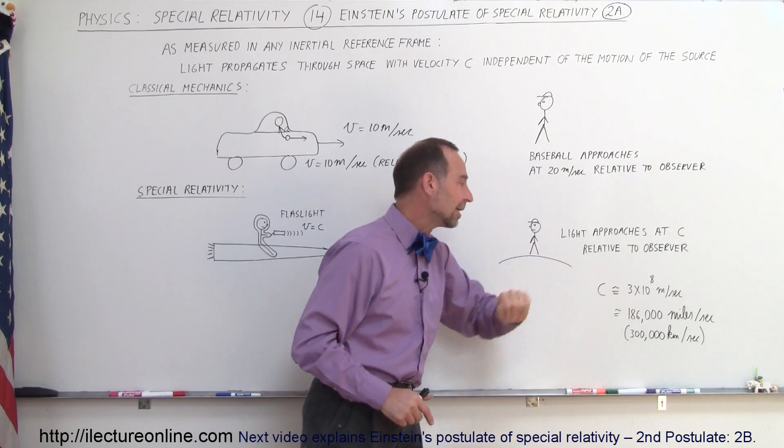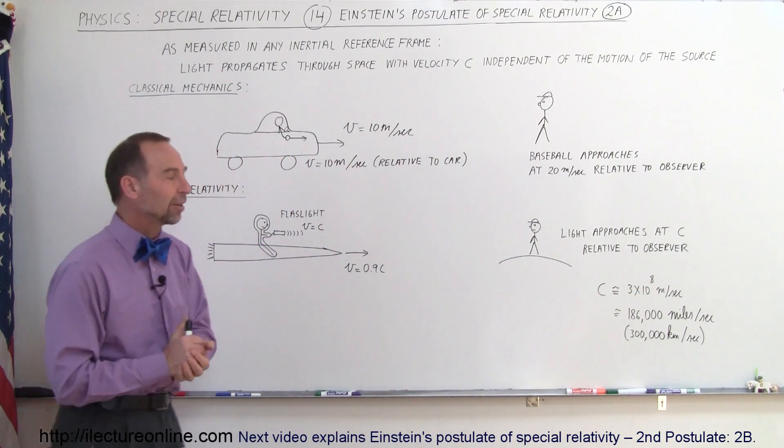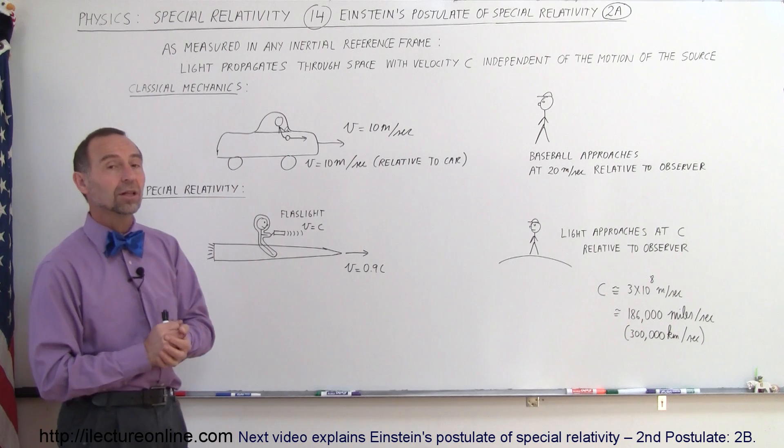By the way, C is about 3 times 10 to the 8 meters per second, which is 186,000 miles per second, or 300,000 kilometers per second.